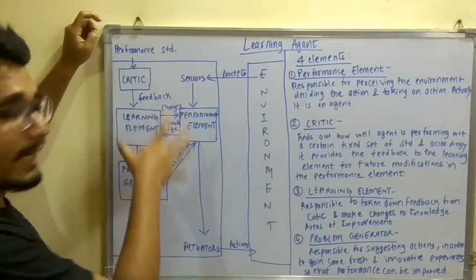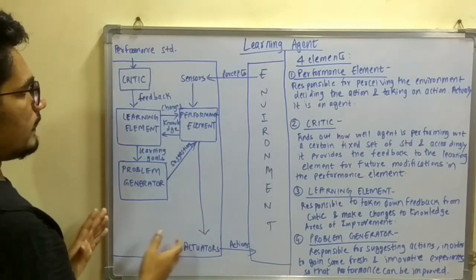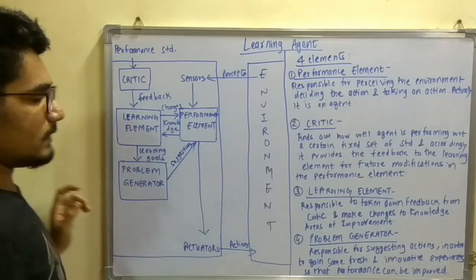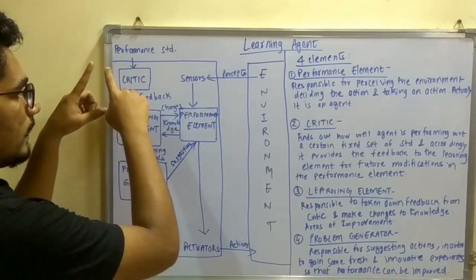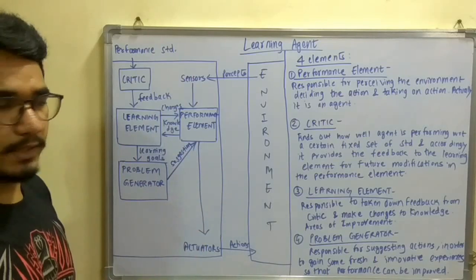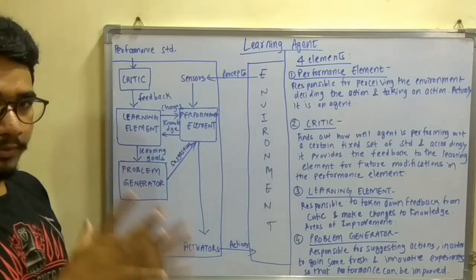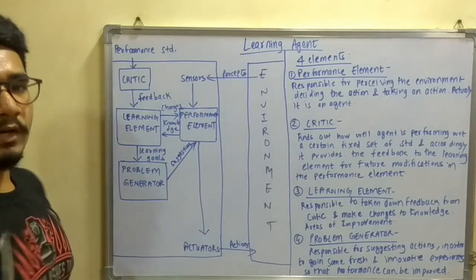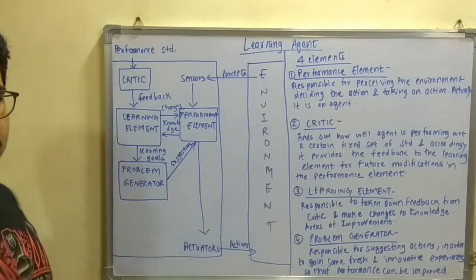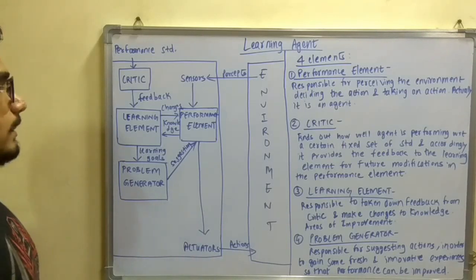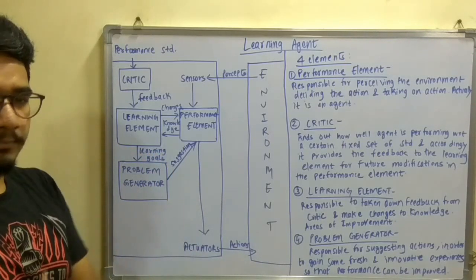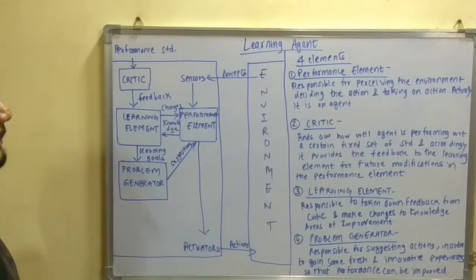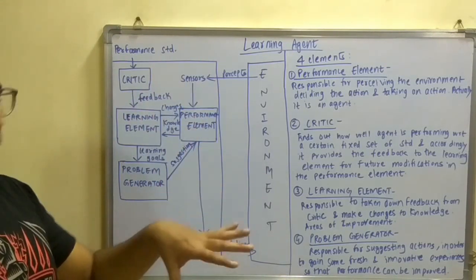This happens at runtime, and that is how the agent performs in the environment. The performance element is the actual agent — this entire block is one agent. Apart from that, we have one more agent within it, so this becomes an agent-within-an-agent architecture. It is a special kind of agent. In human beings, we are also learning agents — we learn from our mistakes, then improve and get suggestions from others.